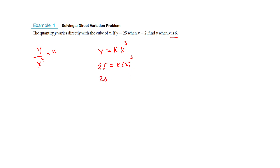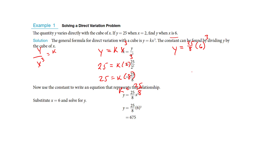So I've got 25 equals k times 8, so k is going to be 25 over 8. Now we found the constant of variation, and we're going to use it to solve this equation. I want to know what y is when x is going to be 6. They've done the calculation — we found the constant, put in x, cubed it — and that all crunches down to 675.